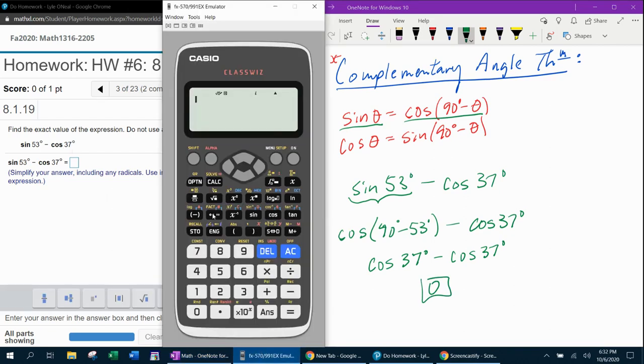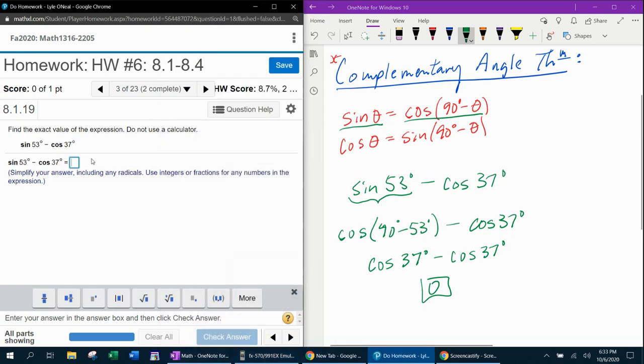Let's check it with the calculator before we check it with MyLabMath. And I am in degree mode. Sine of 53 minus cosine of 37, zero. So what we did manually has been verified electronically.